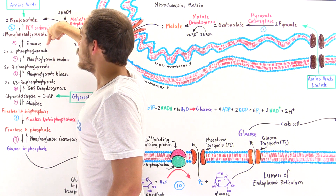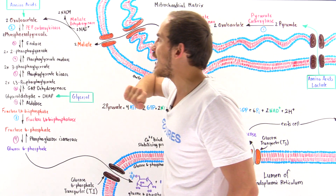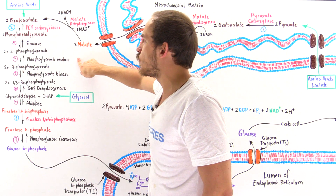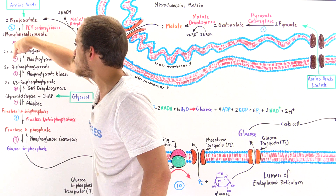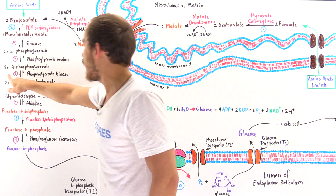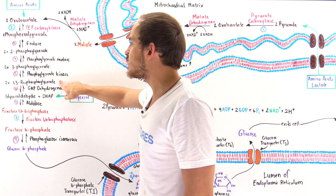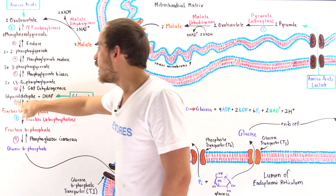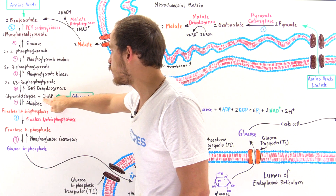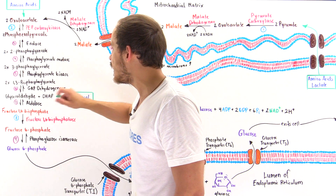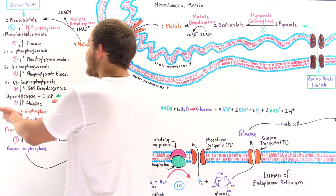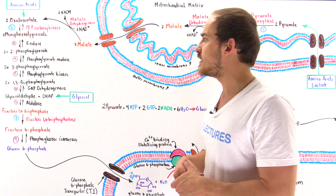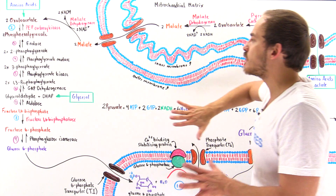In step three, we use enolase: phosphoenolpyruvate is transformed into 2-phosphoglycerate. Then phosphoglycerate mutase transfers the phosphoryl group from carbon-2 to carbon-3 to produce 3-phosphoglycerate. In step five, phosphoglycerate kinase creates 1,3-bisphosphoglycerate. That is then transformed via GAP dehydrogenase into glyceraldehyde-3-phosphate. One of those glyceraldehydes is transformed into dihydroxyacetone phosphate (DHAP) by triose phosphate isomerase. With these two molecules formed, aldolase combines them in step seven to form fructose 1,6-bisphosphate. All these steps take place within the cytoplasm.